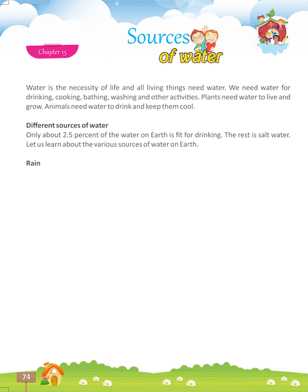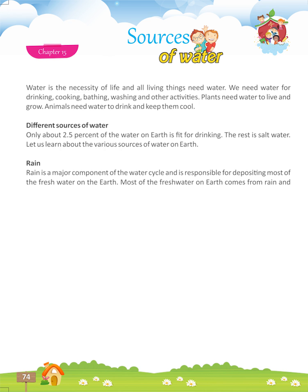Rain. Rain is a major component of the water cycle and is responsible for depositing most of the fresh water on the earth. Most of the fresh water on earth comes from rain and therefore rain is the main source of water. Farmers in India depend on rain to irrigate their fields.